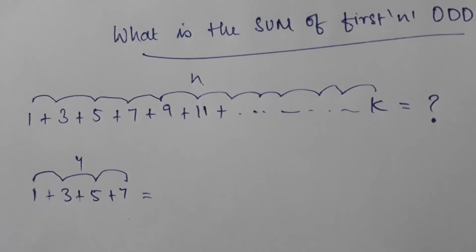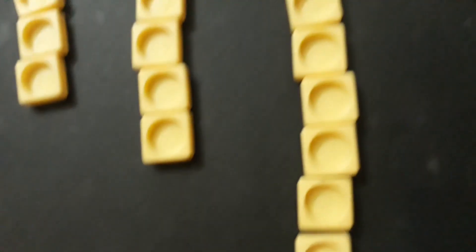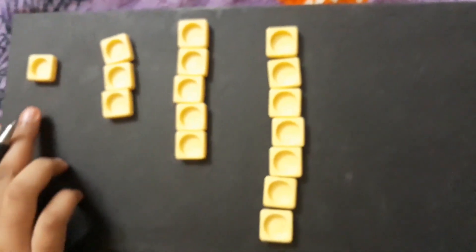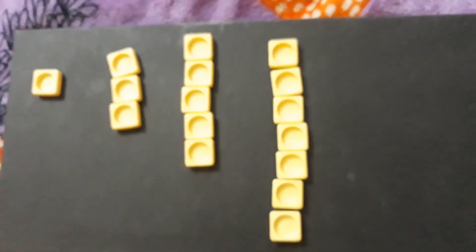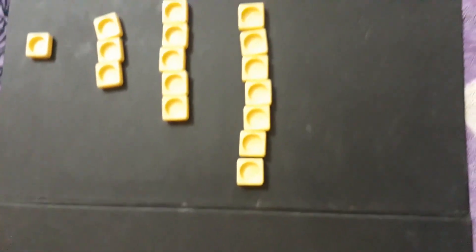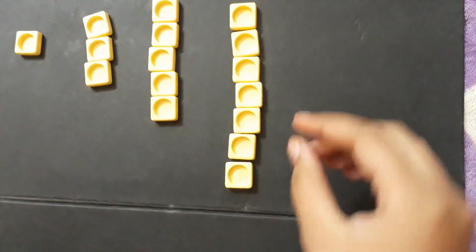Now let us represent them in the form of tiles: 1, 3, 5, and 7. Now I am going to form an L shape with each of these numbers.